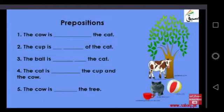Number 1. The cow is dash the cat. The cow is behind the cat. The cow is dash of the cat. As you see in the picture, the cow is in front of the cat.